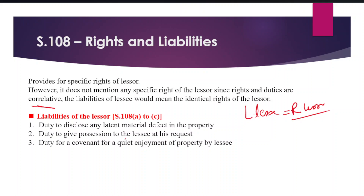The second is the duty to give possession to the lessee at its request — the lessor must give possession when the lessee requests it. Third is the duty for a covenant of quiet enjoyment of the property by the lessee, meaning the lessee can quietly enjoy the property.